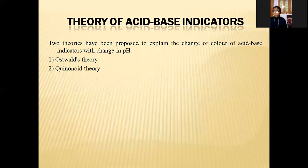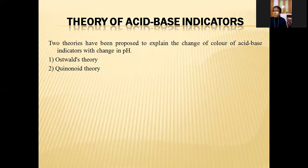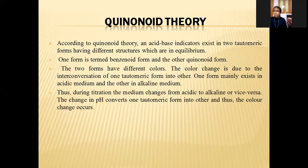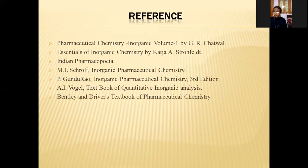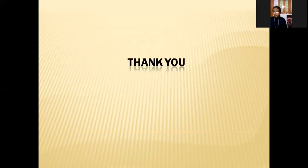So Ostwald theory is mainly based upon the color change of the indicator, and Quinoid theory is mainly based upon the structural change. These are the reference books that should be followed for this topic. Thank you.